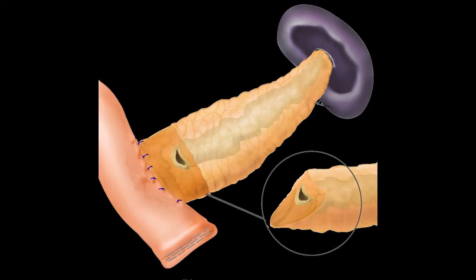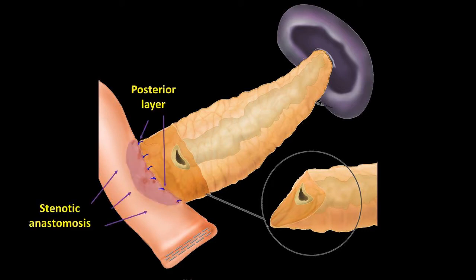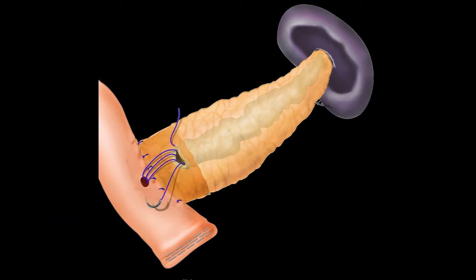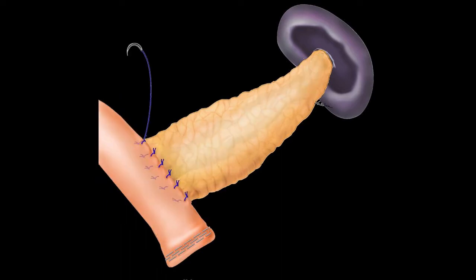This technique consists in the removal of part of the pancreas, preserving the posterior layer of suture. A small opening is done in the jejunum, and a duct-to-mucosa pancreaticojejunostomy is performed using continuous absorbable suture.